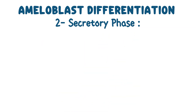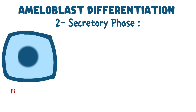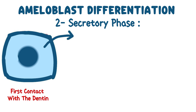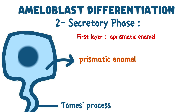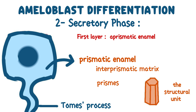Stage 2: Secretory phase. Upon first contact with the dentin, the ameloblasts, which initially lack projections, secrete the first layer of enamel, known as aprismatic enamel. Following this, the ameloblasts develop a projection called Tomes' process and begin producing prismatic enamel. First, they secrete the interprismatic matrix, which forms the material between the enamel prisms. Next, they secrete the enamel prisms, the structural units of prismatic enamel.